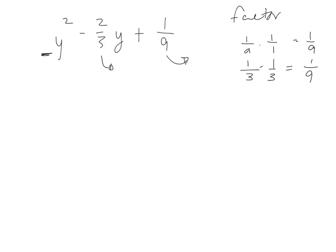So to get a negative 2 thirds, each one would have to be negative. So negative 1 third times negative 1 third, that'll give me a 1 ninth. If I add them together, it gives me negative 2 thirds. So those are my two numbers that I put in.